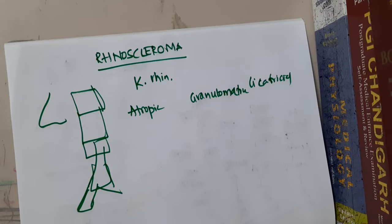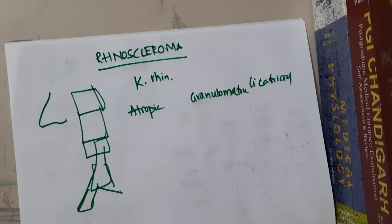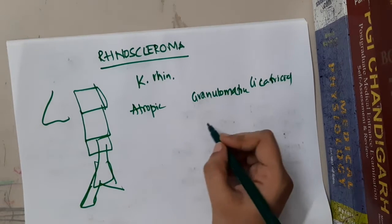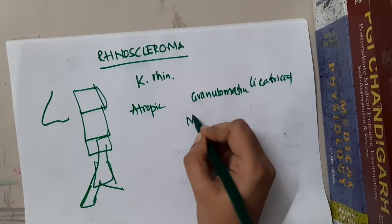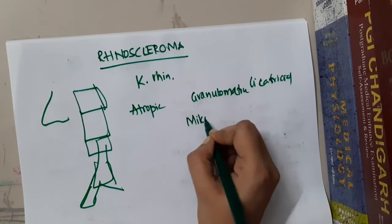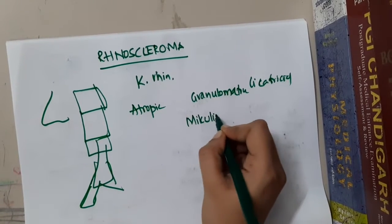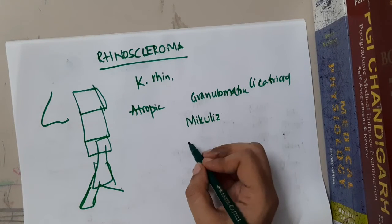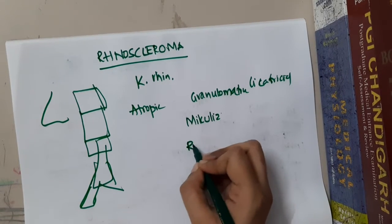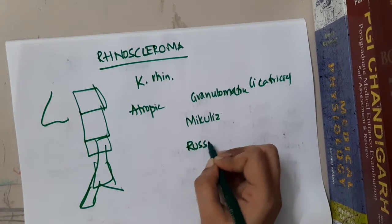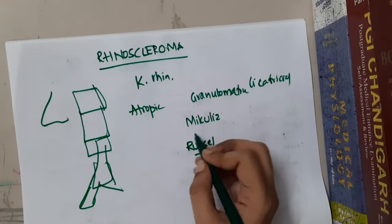In the granulomatous stage, which is actually a proliferative stage, a granulomatous reaction is seen. There is presence of Mikulicz cells and Russell's bodies in this stage.